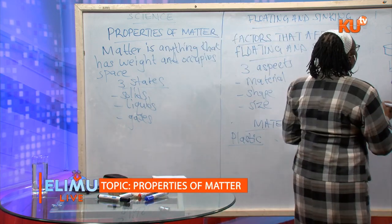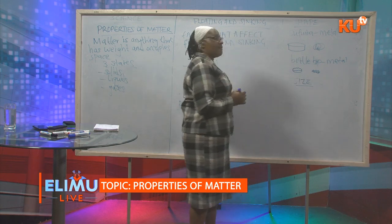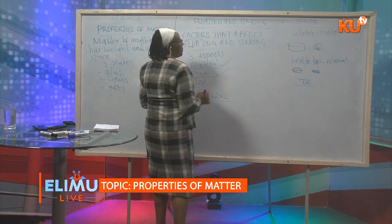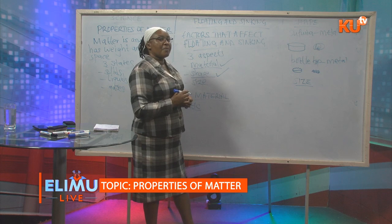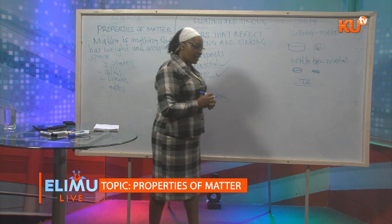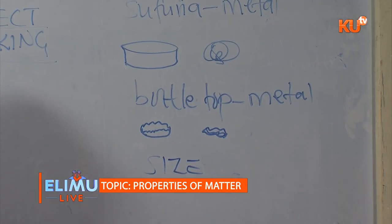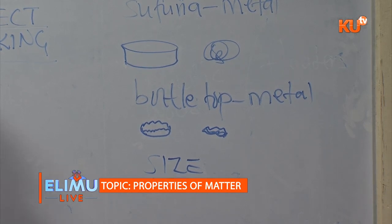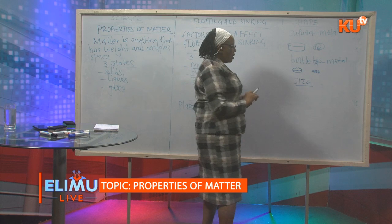We look at the third aspect affecting floating and sinking, which is size. Size is investigated, but you find that only material and shape affect floating and sinking. If you look at a ship, it is very big and heavy but does not sink regardless of its size. A sufuria — smaller or bigger — so long as it has that shape, it will always float. A log of wood and a small piece like a pencil — regardless of size, they will float.